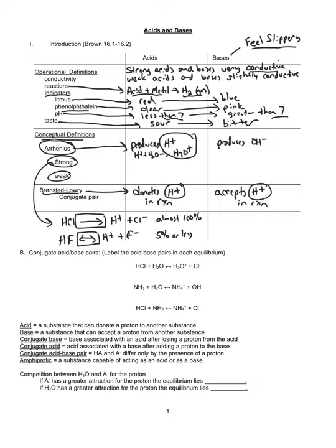The same thing applies to bases. Strong bases like sodium hydroxide — you will see a single-sided arrow, showing it completely dissociates producing hydroxide ions.